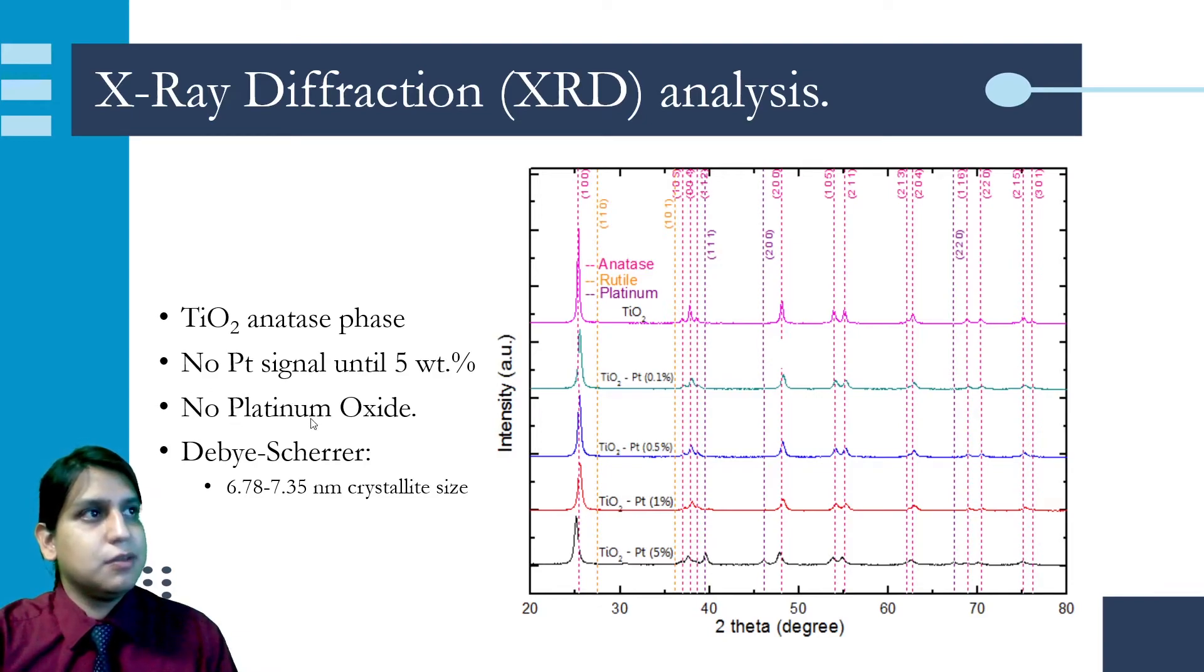We also didn't obtain platinum oxide signals in the diffractograms, from which we can conclude that the platinum didn't suffer any oxidation processes. Through the Debye-Scherrer method, we estimated the crystallite size of the materials ranging from 6.8 to 7.3 nanometers.